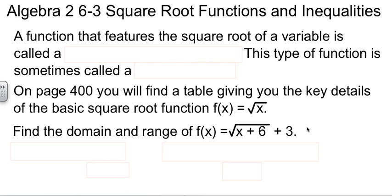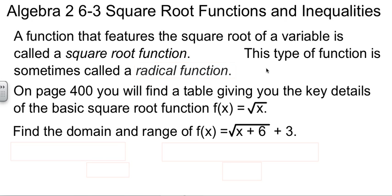A function that has a square root of a variable, that's all it takes to be a square root function. If you have the square root of x, or the square root of x plus 6, anything like that makes it a square root function. Sometimes you'll see books call these radical functions. Your book switches back and forth between the two names, so I want to show you both names so that when they use one, you know it means the other as well.